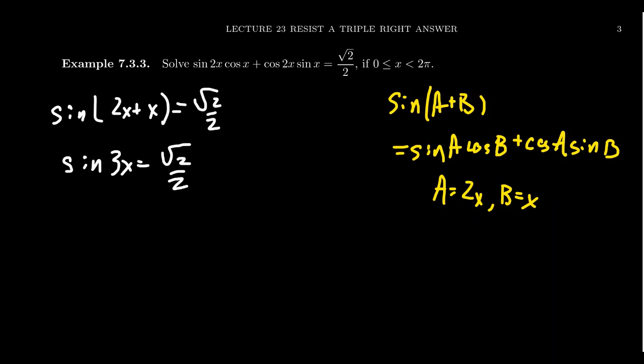When is sine equal to root 2 over 2? That sounds like a 45 degree angle. Whoops, we're in radians. That should be π/4. So we're going to get 3x equals π/4 plus 2πk. That's the solution in the first quadrant. Sine is also positive in the second quadrant, so we need the angle which references π/4 in the second quadrant. That's 3π/4 plus 2πk.